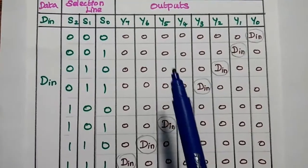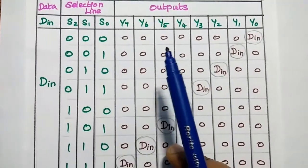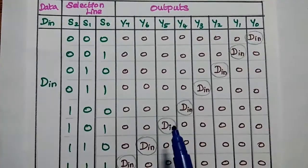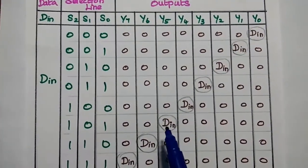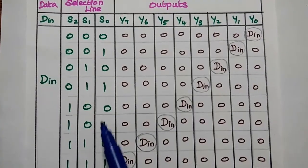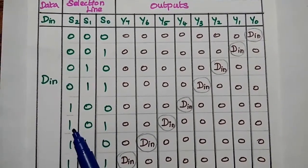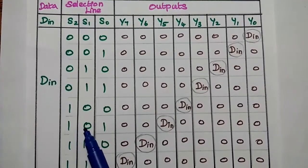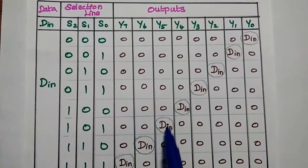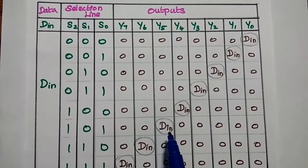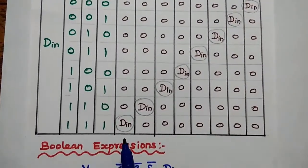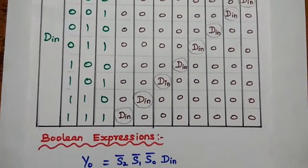For example, if you want to select Y5, which is the 6th output line, then you have to give 101 as the input to the selection lines. So whenever S2 is 1, S1 is 0, and S0 is 1, then Y5 — the 6th output line — is selected. Based on that, we can select any specific output line.